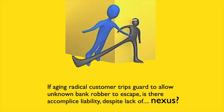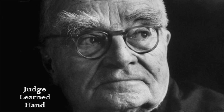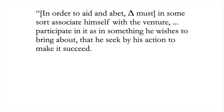As in this hypothetical, what is evident is that the purpose of the aging radical is to assist the principal. The Gladstone court quotes the words of the eminent judge Learned Hand in the case of United States versus Peoni: 'In order to aid and abet, the defendant must in some sort associate himself with the venture, participate in it as in something he wishes to bring about, that he seek by his action to make it succeed.'